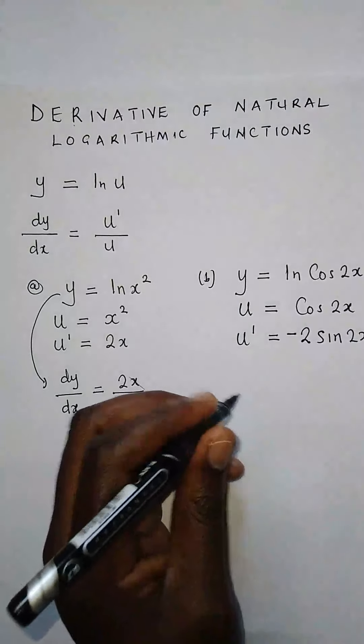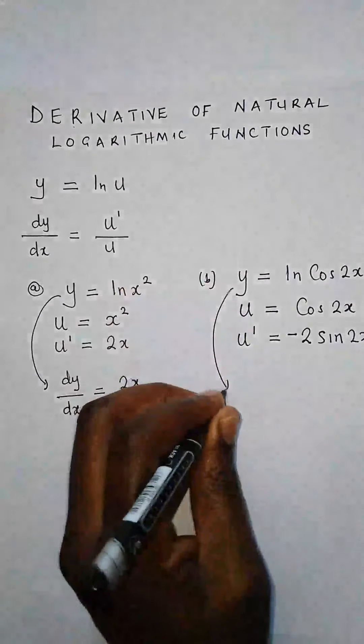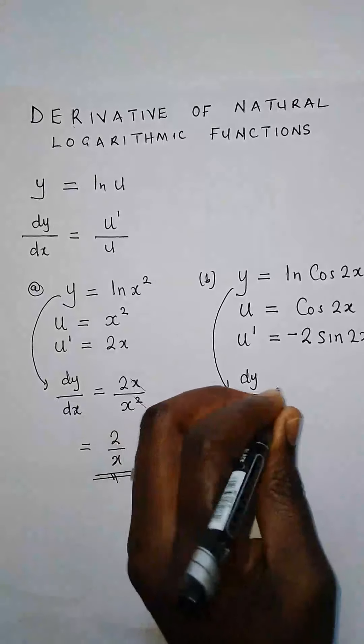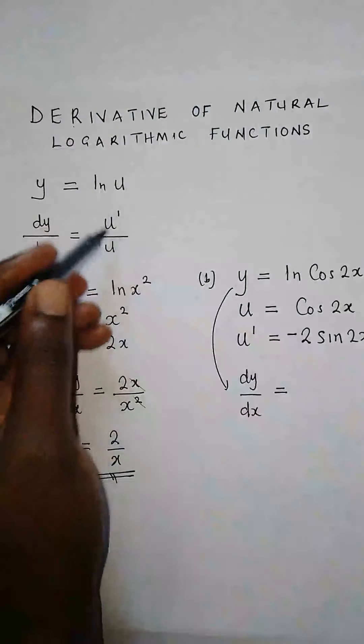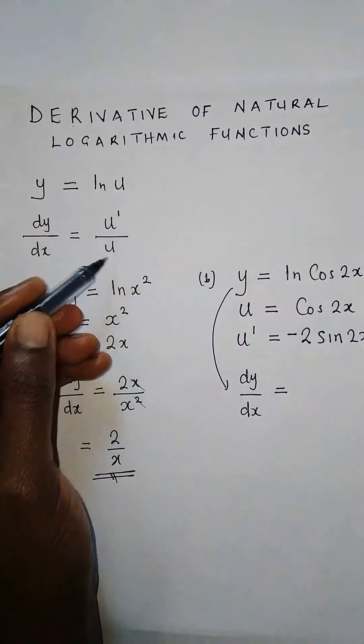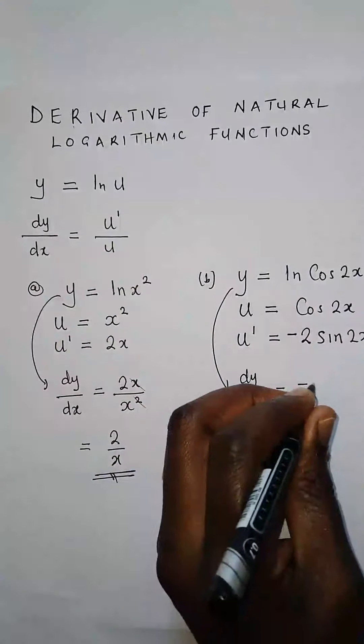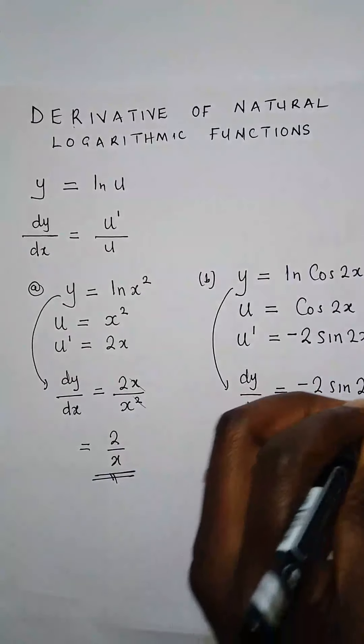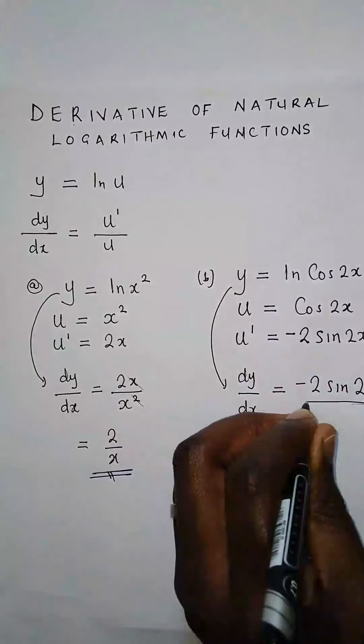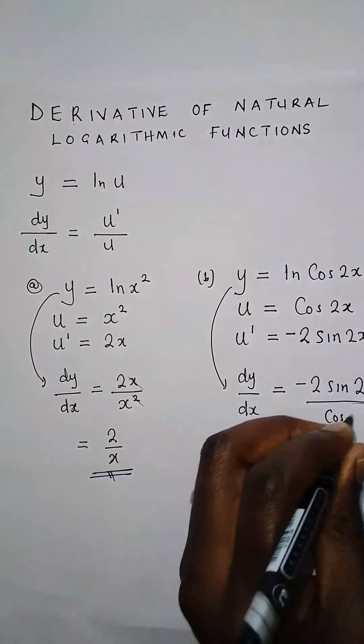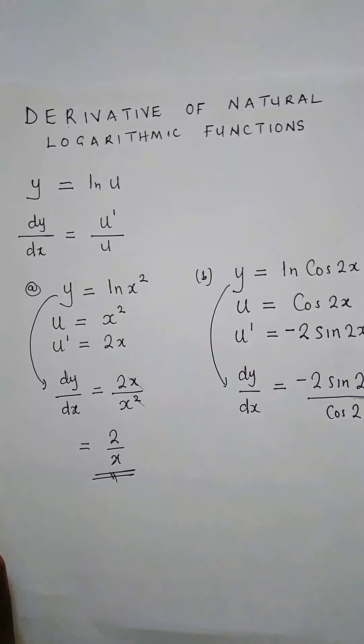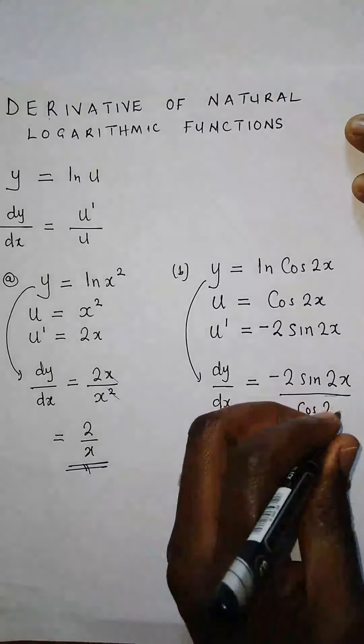Then I can go ahead now to say dy/dx equals u prime over u. So our u prime was negative 2 sine 2x over cos 2x.